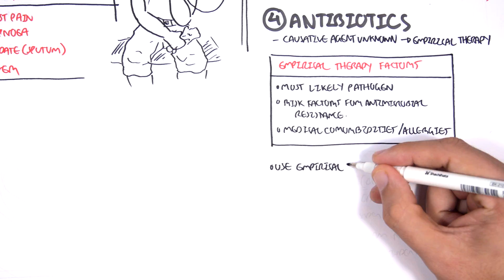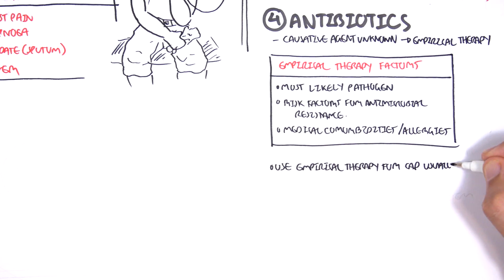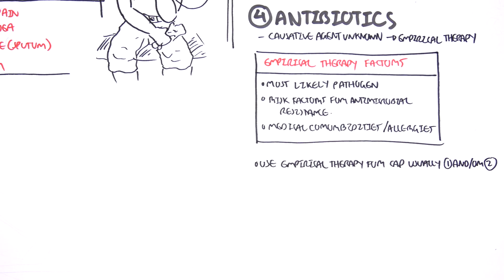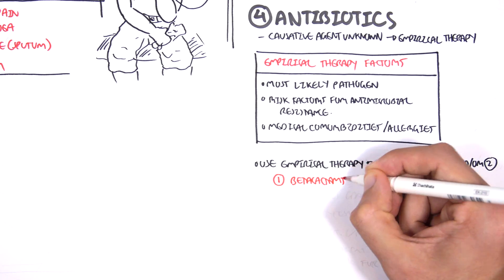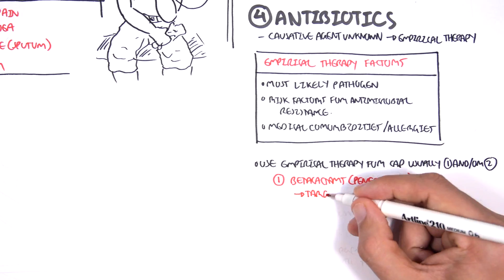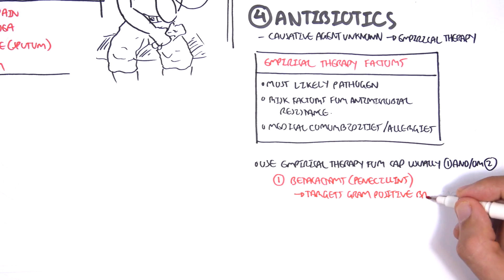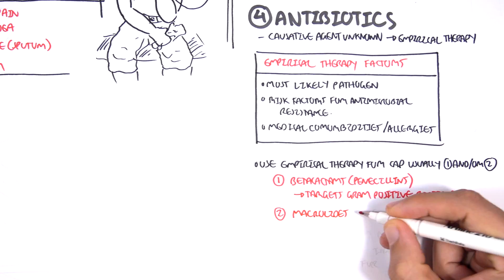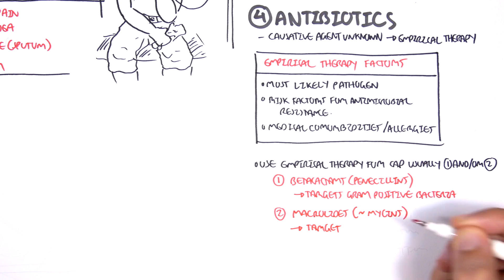So the use of empirical therapy for community-acquired pneumonia, you use two things. Number one are beta-lactams, such as your penicillins, which will help you target your gram-positive bacteria. The second one, you can use macrolides, which are your mycins. Macrolides can help you target your gram-negative bacteria.